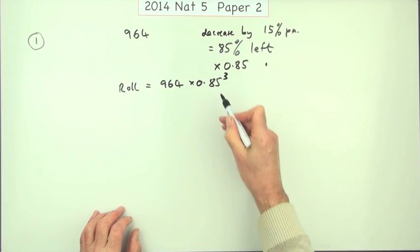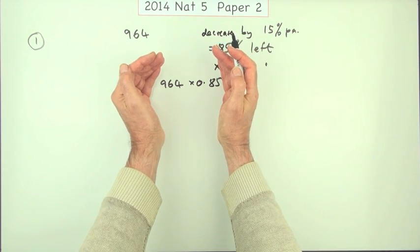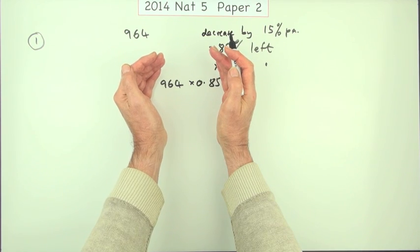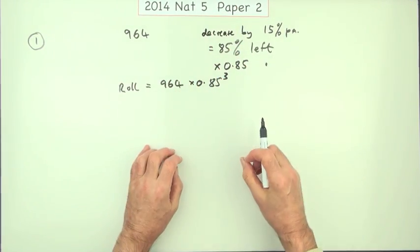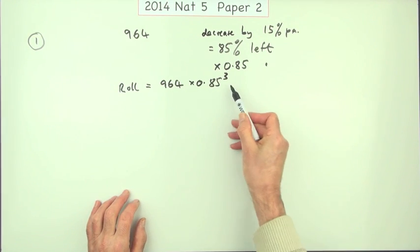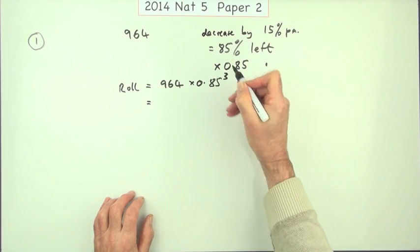Notice it's not times three, it's to the power three. It would be times 0.85 to get the remaining amount, then times 0.85 again, and then times 0.85 again. It's 0.85 to the power three. That's the second mark.